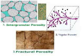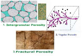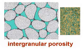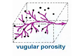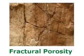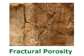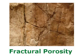Let's review. There are three types of porosity. One: intergranular porosity, where the porosity is caused by the spaces in between the grains. Two: vugular porosity, where the porosity is caused by holes that form in the rock. And three: fractural porosity, where the porosity is created by fractures or large cracks in the reservoir rocks.